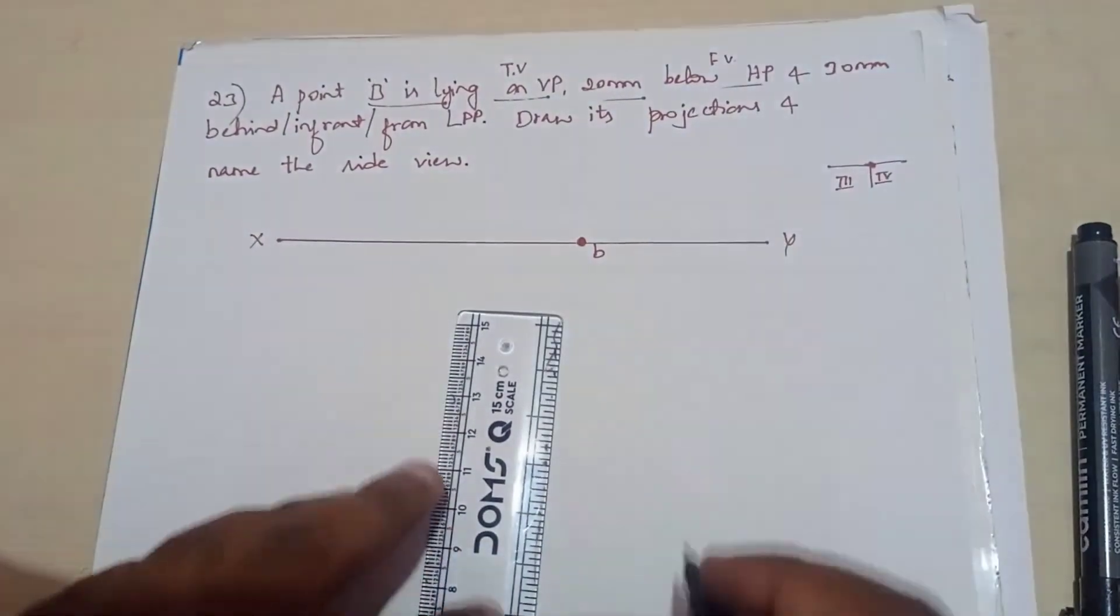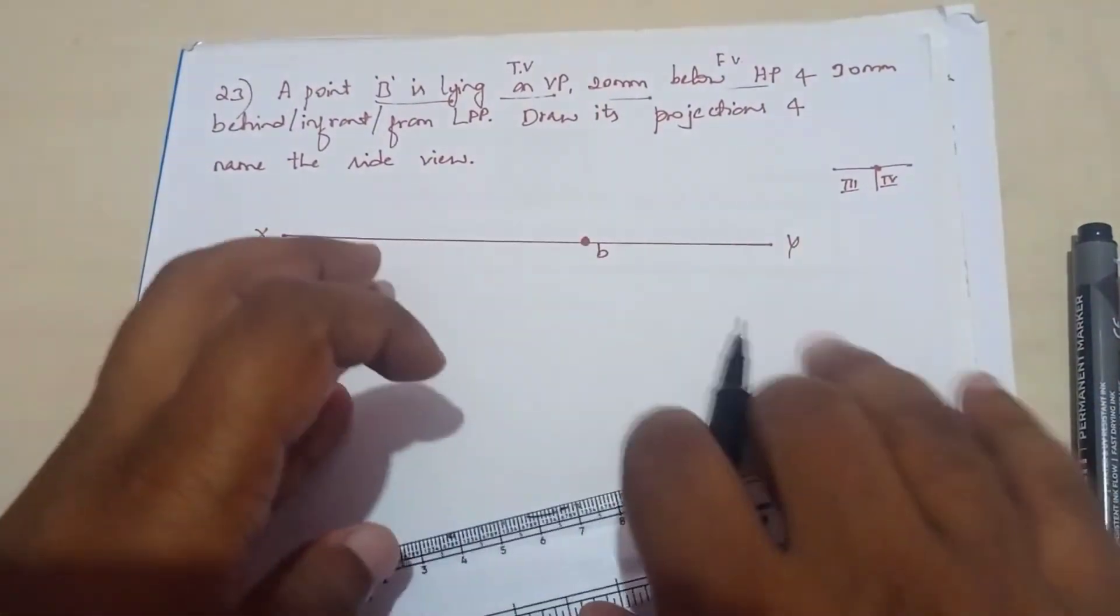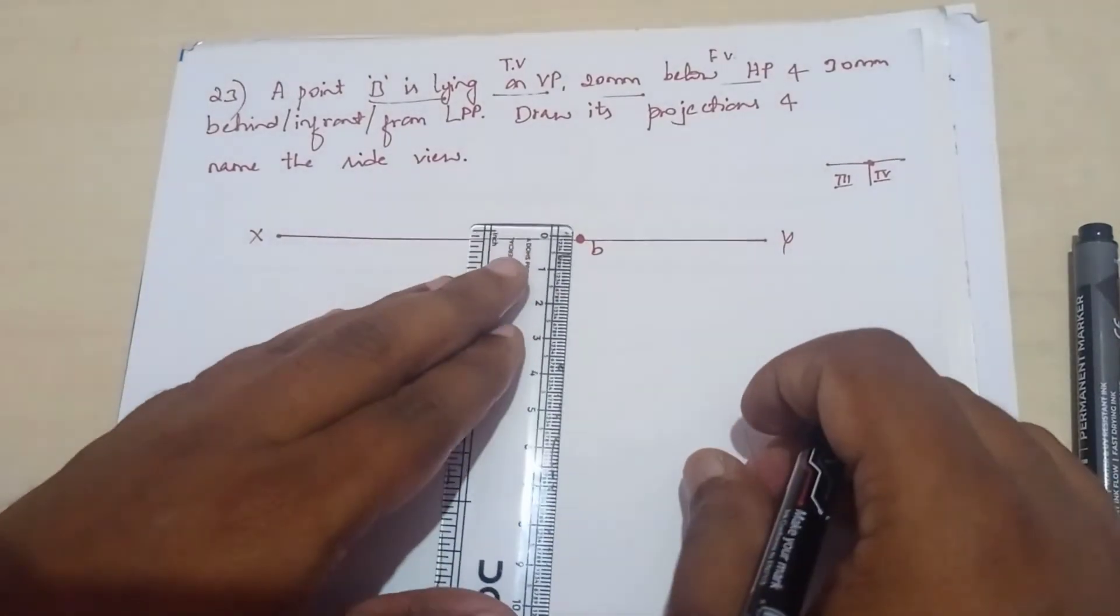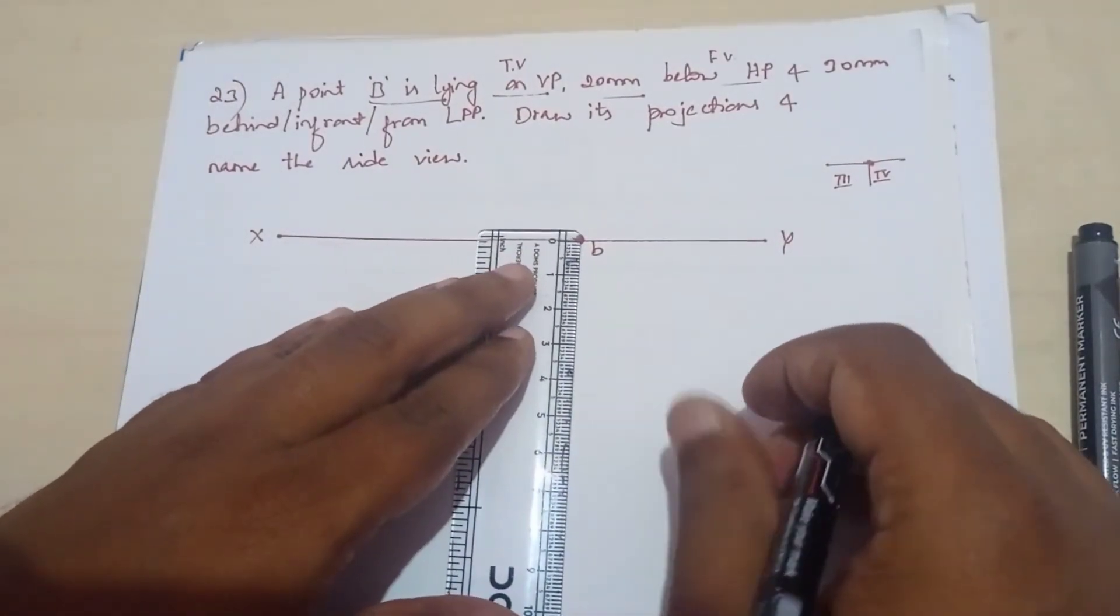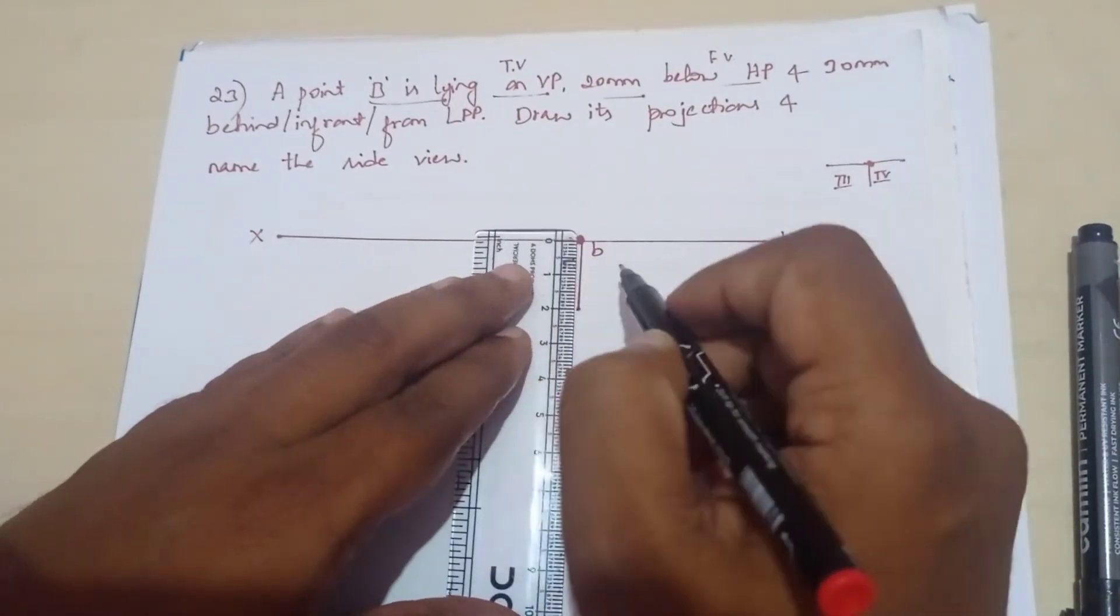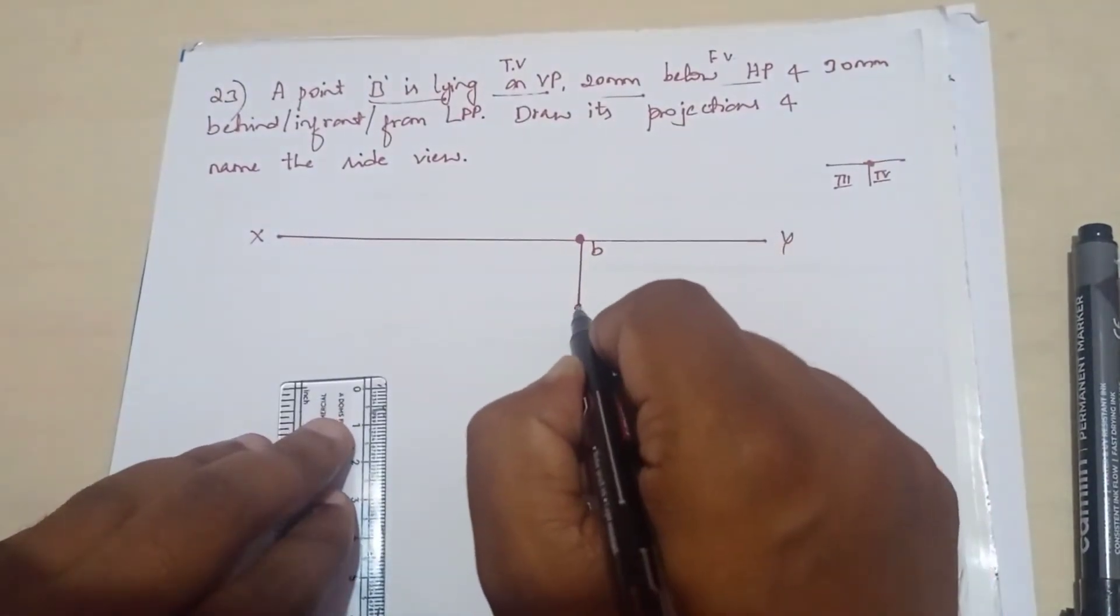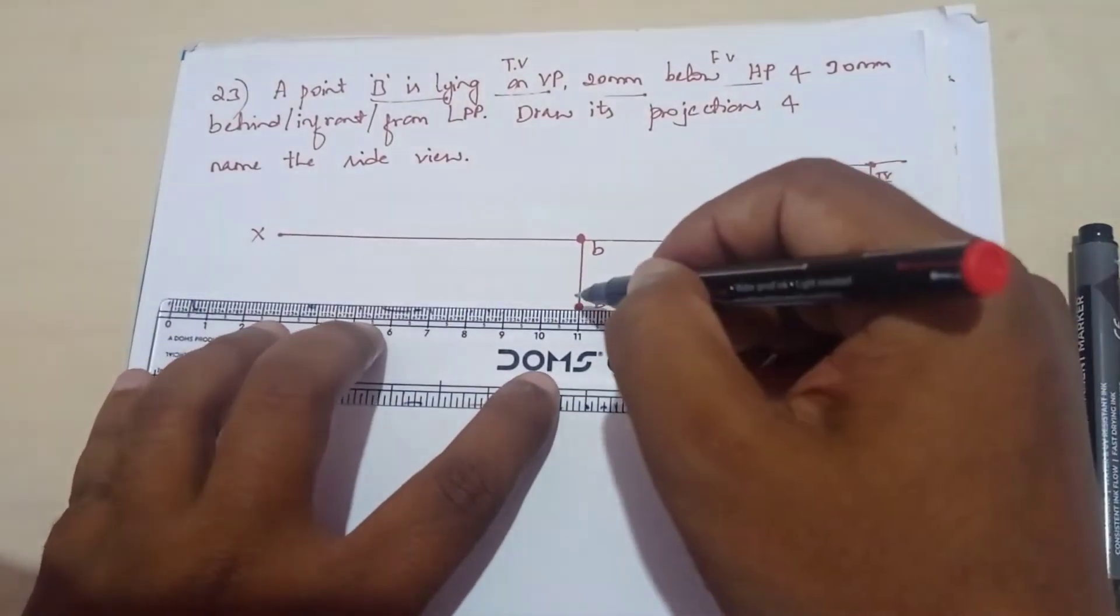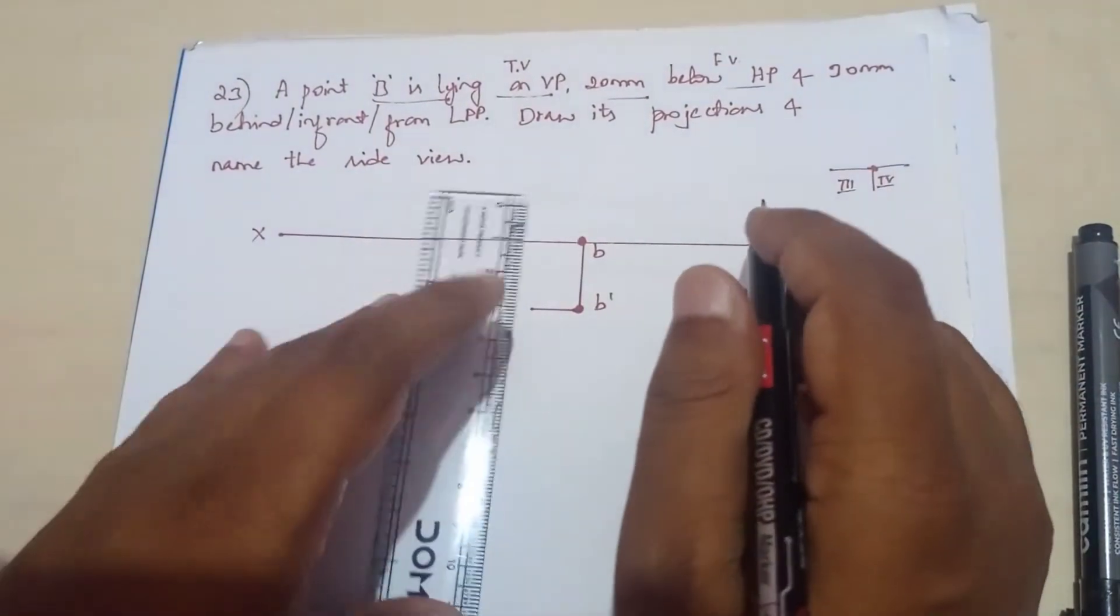So it lies below the XY line, so that means we should consider here 20 mm and put a point here. That is B dash, and here you mention the dimension of it.